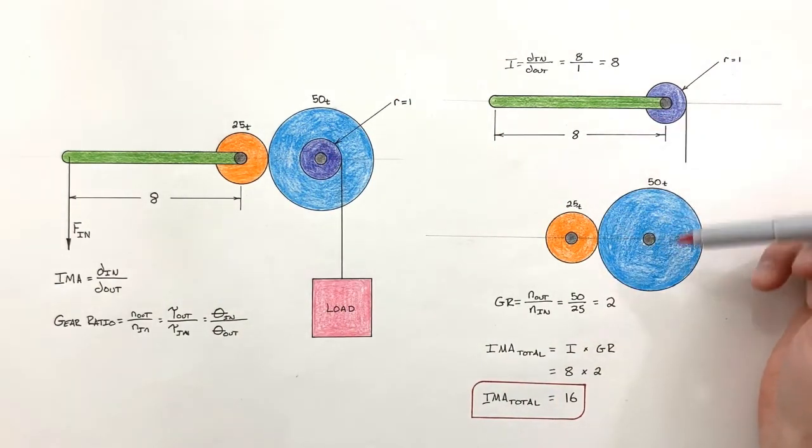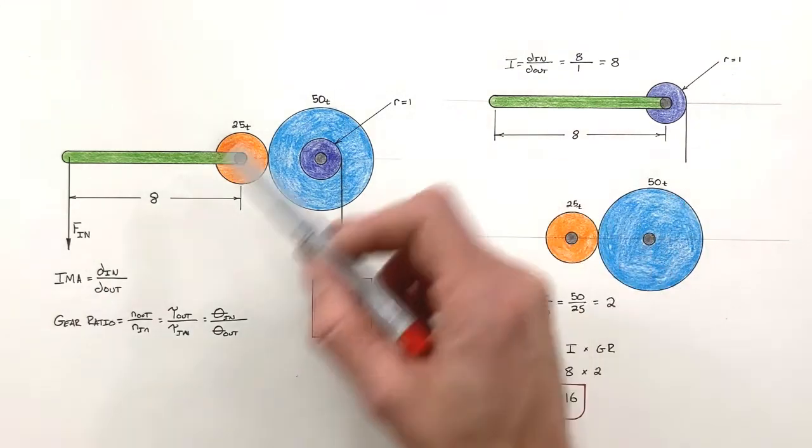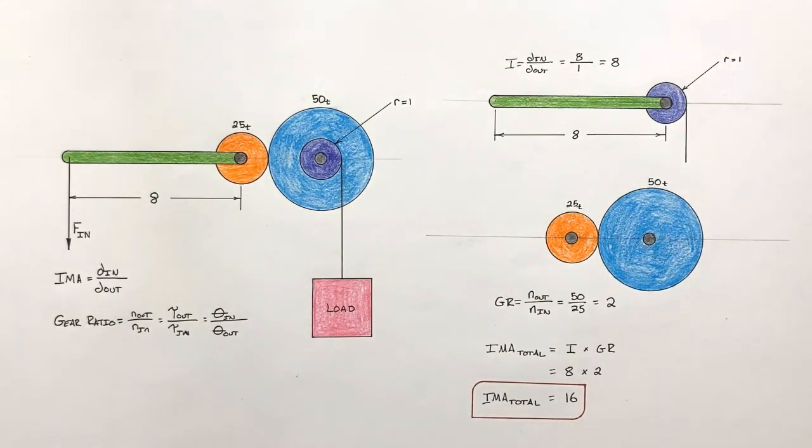And so we have to be a little bit clever in how we work out our IMA for a compound machine. So this is how we deal with compound machines that include simple machines and gears. And that's all for now.